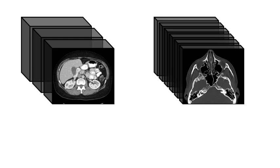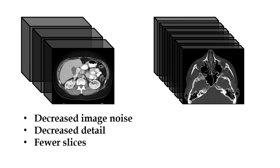The appropriate reconstruction slice thickness depends almost entirely on the anatomy being scanned. Larger body sections, such as the chest or abdomen, can be best visualized with thicker slices. Thicker slices through the chest and abdomen result in decreased image noise, which is good, but it also results in decreased detail and fewer total slices.